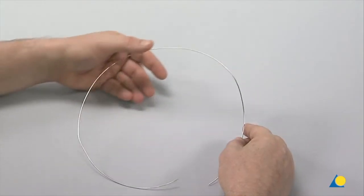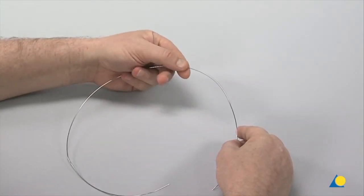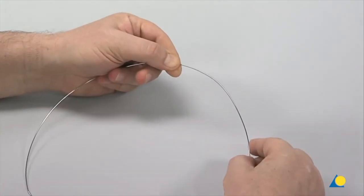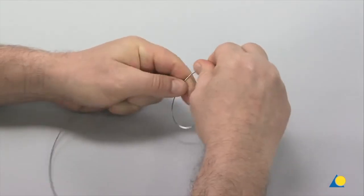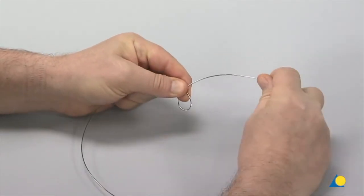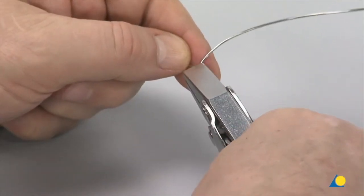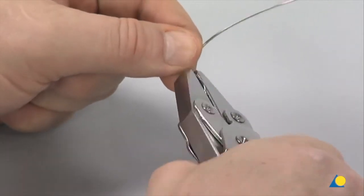A piece of 1mm circlage wire roughly 50cm long is cut from the coil. A loop is made by hand, approximately 1 third along the wire. The loop is then twisted with the flat-nosed parallel pliers.